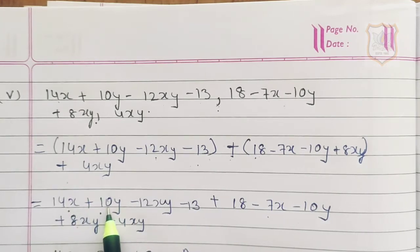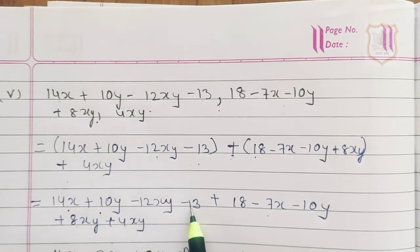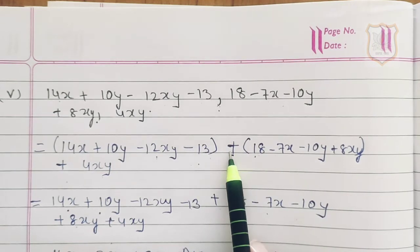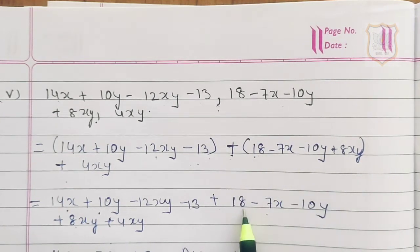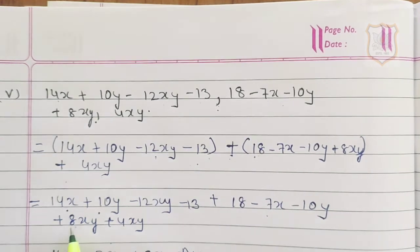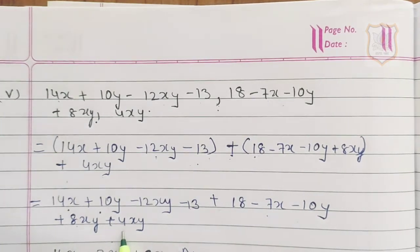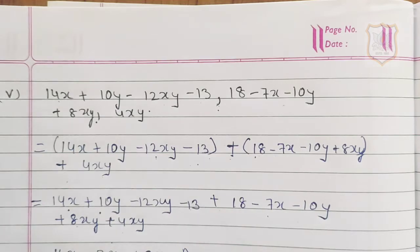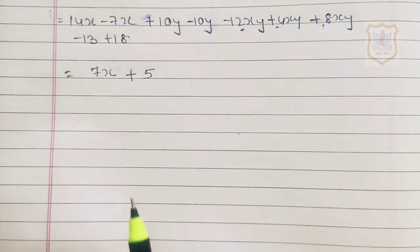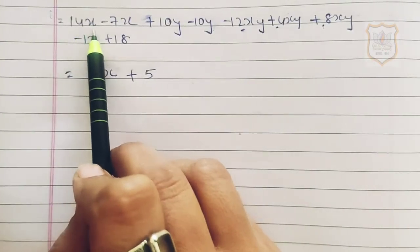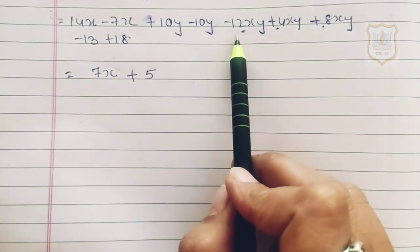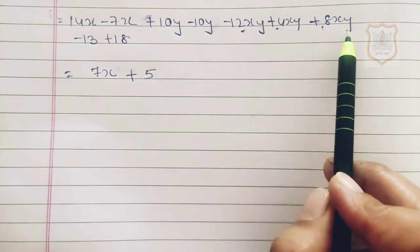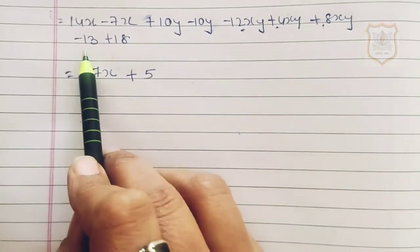Opening the brackets — since plus signs are in front, the signs do not change — we write: 14x plus 10y minus 12xy minus 13 plus 18 minus 7x minus 10y plus 8xy plus 4xy. Arranging like terms: 14x minus 7x, plus 10y minus 10y, minus 12xy plus 4xy plus 8xy, minus 13 plus 18.